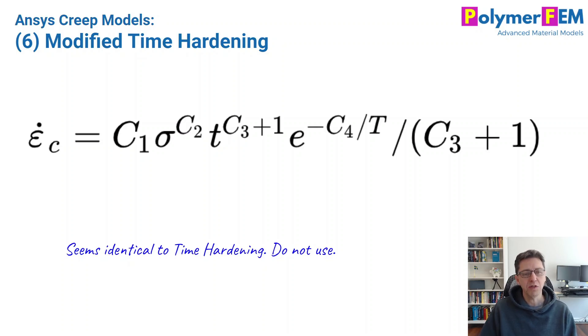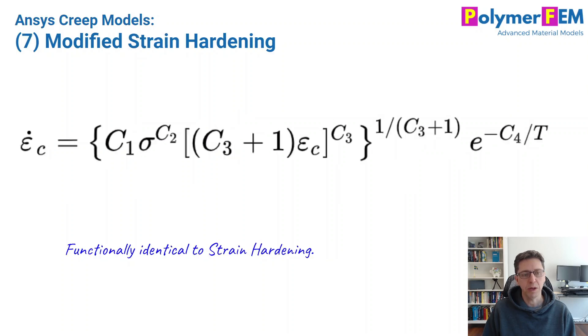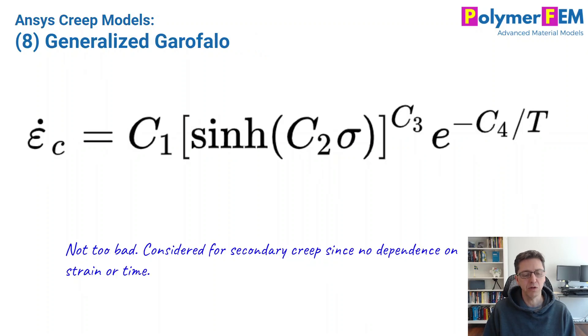Number six is modified time hardening. It is very similar to the first time hardening model that I talked about. It just has slightly different parameters. So since it's the same, really, why would you use it? Maybe you like these parameter sets better than the generic one, but I wouldn't use it because it seems more complicated to me. Similarly, the modified strain hardening model has stress to a power, strain to a power, and exponential dependence on the temperature. It's very similar, if not actually functionally identical to the strain hardening model. It just looks more complicated. If you like that, go for it, but I don't see a particular reason for it.